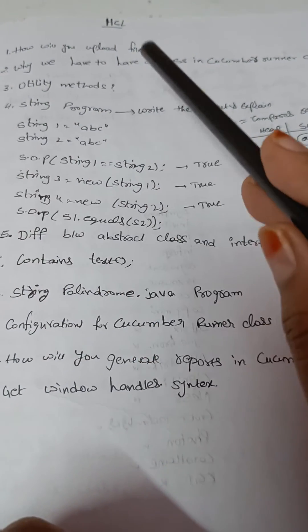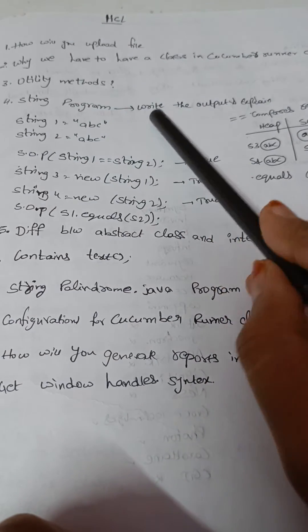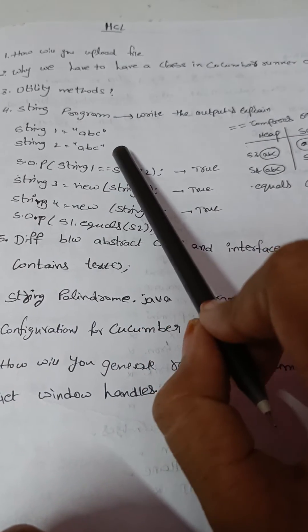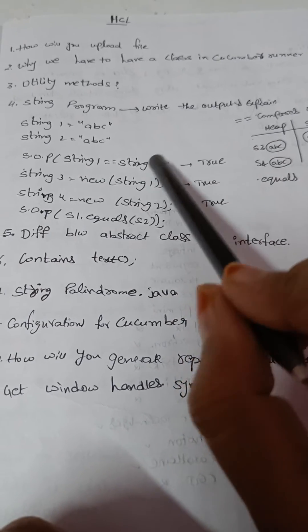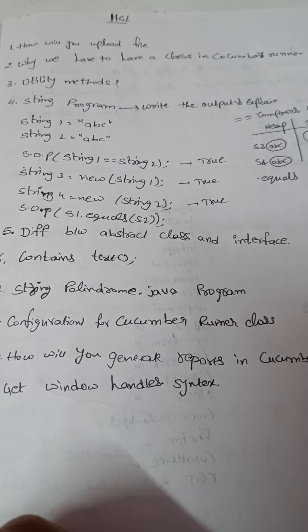We have to explain it and what is utility methods. So this is basically a framework question and they have provided me a string program and asked me to write the output, and also how I have came across that output I have to explain.